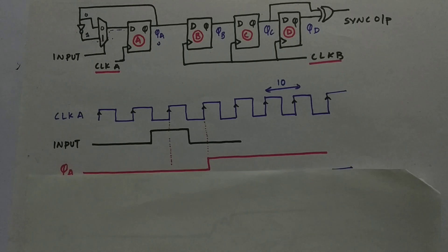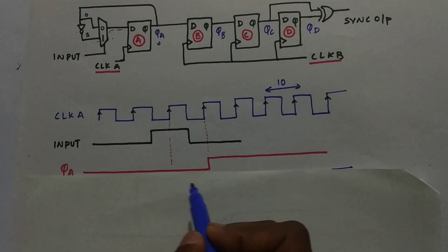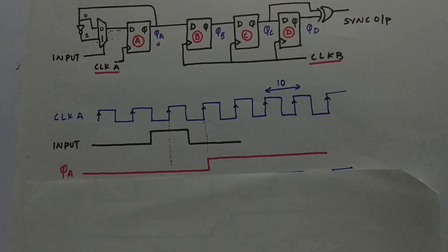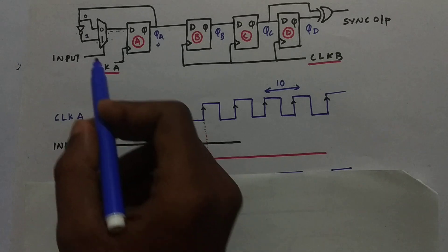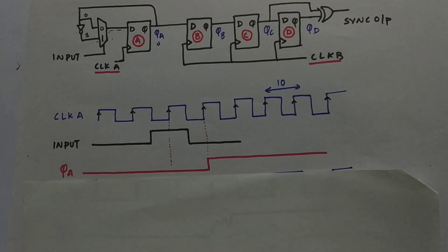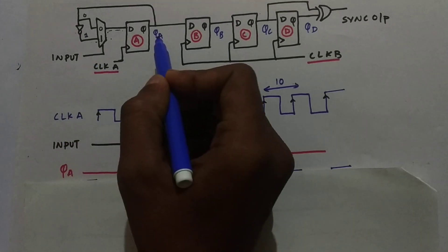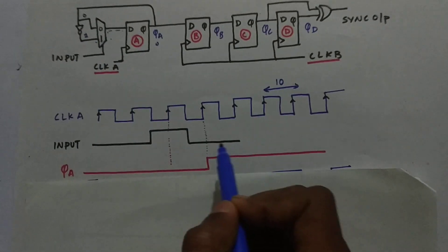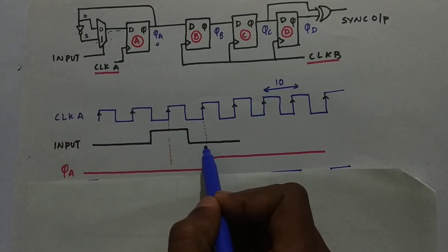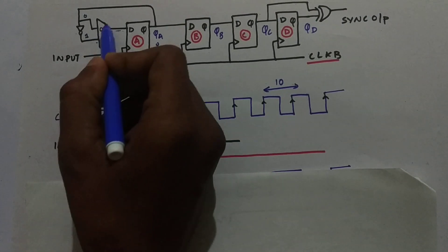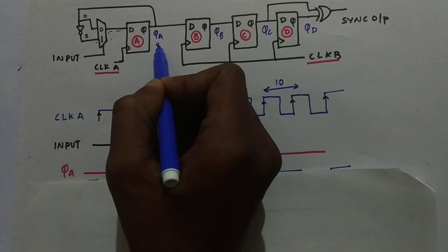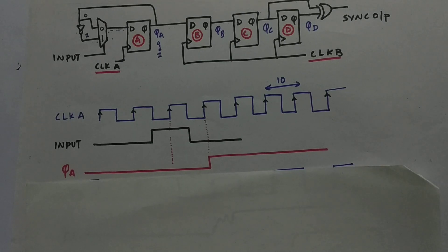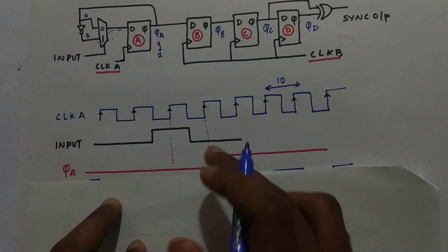The output of flop A, QA, will be a level. Once the pulse is detected by the MUX, QA will never go back to zero. First QA was zero; when the pulse came it started to rise to one. After the pulse went low, the MUX selects zero but QA is already one — it has been changed from zero to one. This level is then passed to the synchronizer circuit in clock domain B.